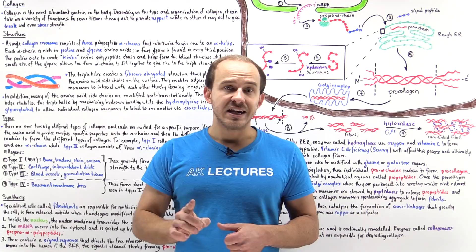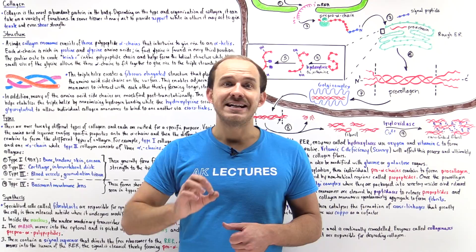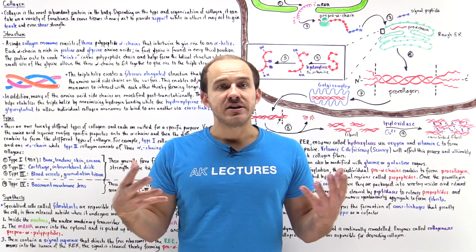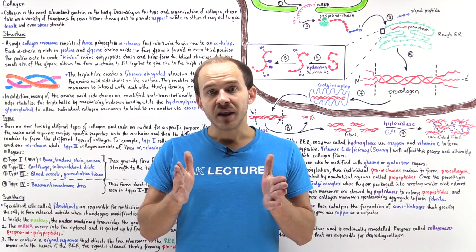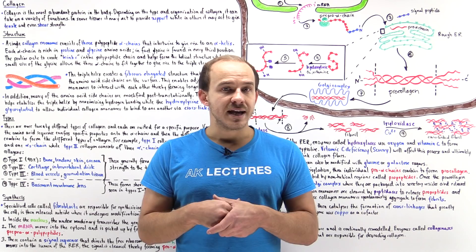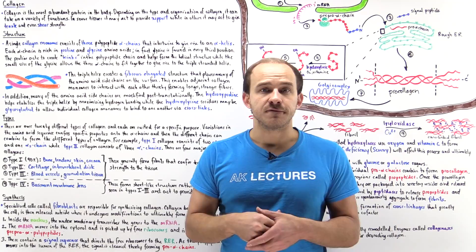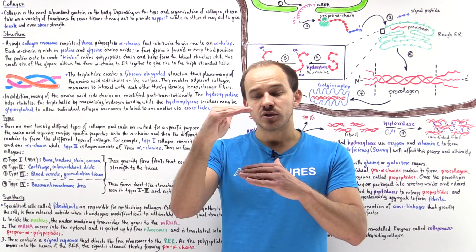Collagen is the most abundant protein in the body and we find collagen everywhere. We find it in the skin, in the eye, in our blood vessels, in bone, in cartilage, in tendons. It's even the major component of the extracellular matrix. Depending on the type of collagen and how the collagen organizes in that specific tissue, it actually carries a variety of different functions.